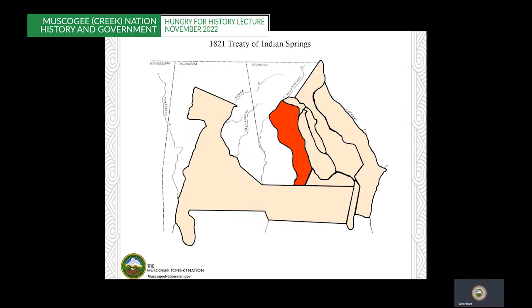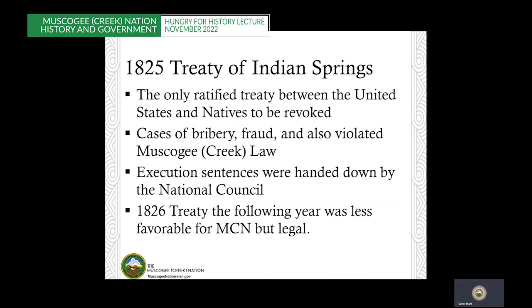In 1821, the Treaty of Indian Springs signaled a new way in which our nation interacted with the U.S. Our National Council saw the U.S. identifying individuals to promote, make wealthy, and more favorable for U.S. interests. This treaty set aside about 1,600 acres — 640 for the Macon Reserve and 1,000 acres for General McIntosh's plantation. The 1821 Treaty forced the National Council to pass laws that prevented land cessions without approval of the National Council. The 1825 Treaty of Indian Springs is the only ratified treaty between the United States and Native nations to ever be revoked — there were clear and obvious cases of bribery and fraud. For the Creek Nation, it violated Creek Nation laws, the crime was punishable by death, and ultimately death sentences were handed out.